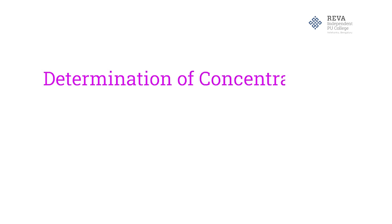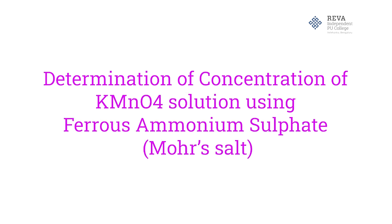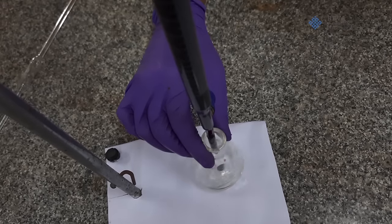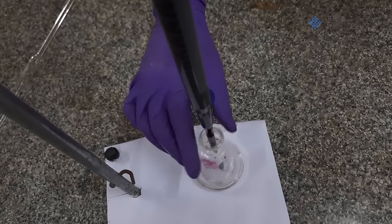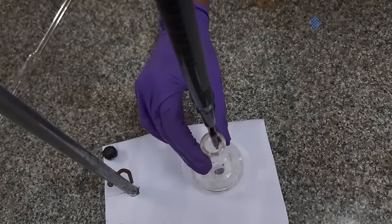Determination of concentration of potassium permanganate solution using ferrous ammonium sulphate, also called Mohr's salt. To determine the strength of given potassium permanganate solution using ferrous ammonium sulphate, we will use an experiment by name titration.